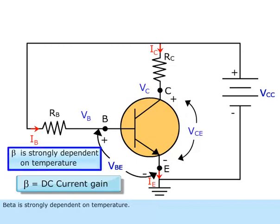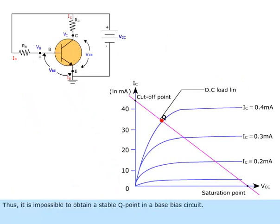Beta is strongly dependent on temperature. Thus, it is impossible to obtain a stable Q-point in a base bias circuit.